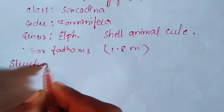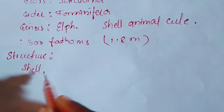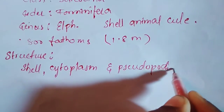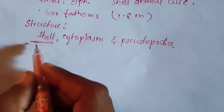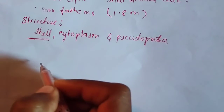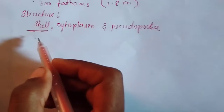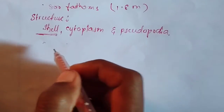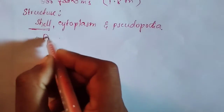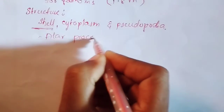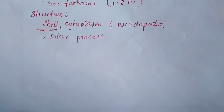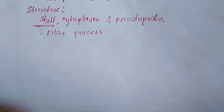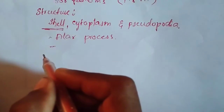When we talk about the structure of these organisms, they have a shell, cytoplasm, and pseudopodia. The shell is the outer covering that helps in protecting the organism. The shell has a number of chambers that overlap with one another; this process of overlapping of chambers is called the alar process. The shell is composed of calcium carbonate and small amounts of silicon and magnesium sulfate.